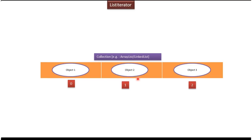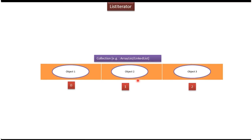In this video tutorial I will cover List Iterator. Suppose if you want to iterate over the list and get each object one by one, then we can use List Iterator. And using List Iterator we can move the cursor in forward direction and also we can move the cursor in reverse direction and get each object.